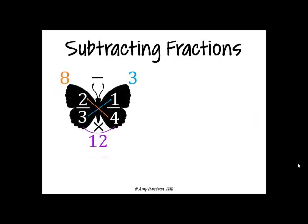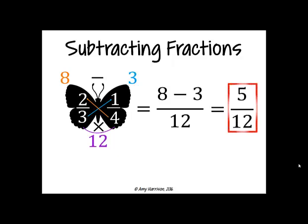When subtracting fractions, all you have to do is subtract the numerators, 8 minus 3, and put them over the common denominator 12. Since 8 minus 3 is 5, our answer is 5 over 12.